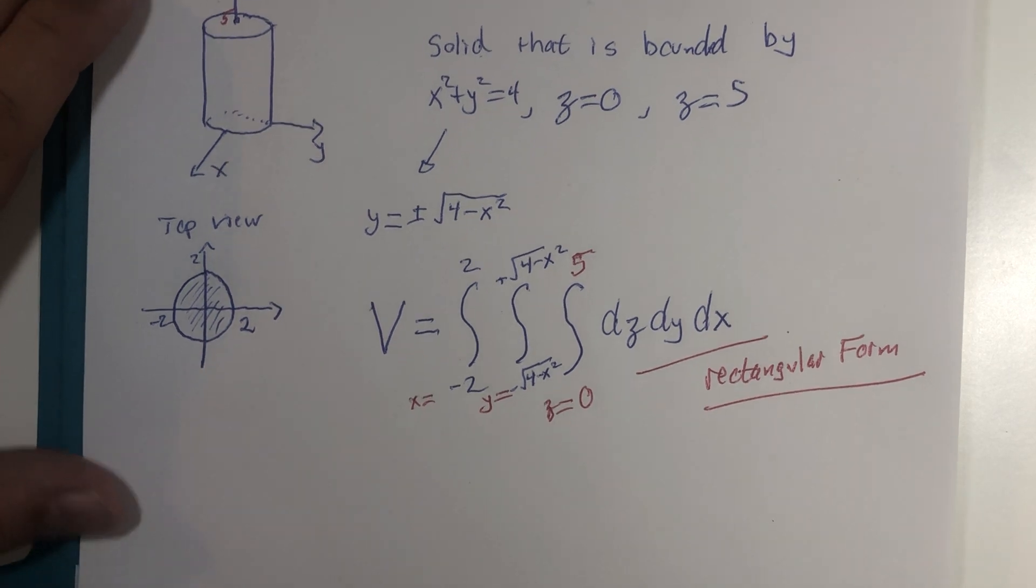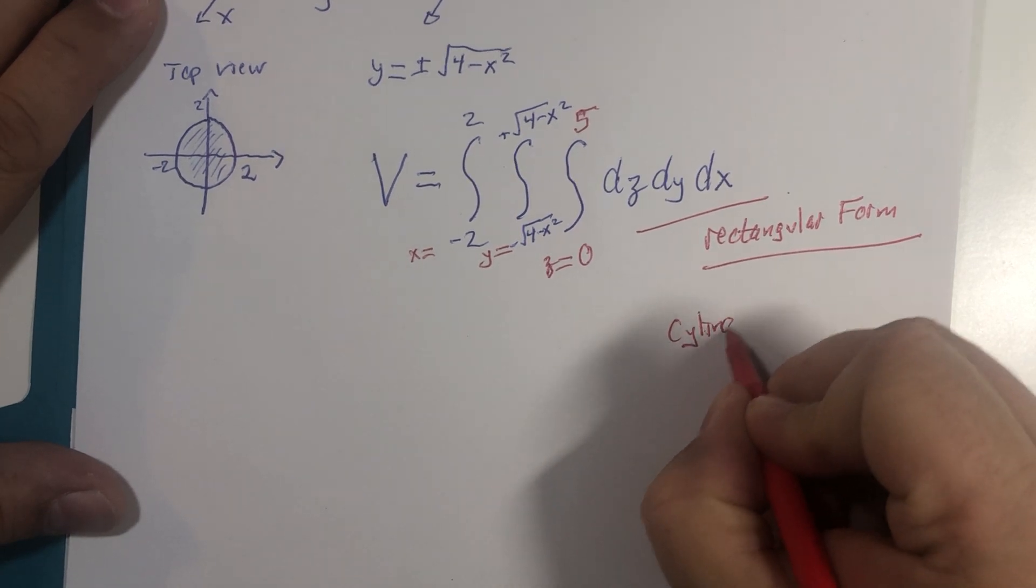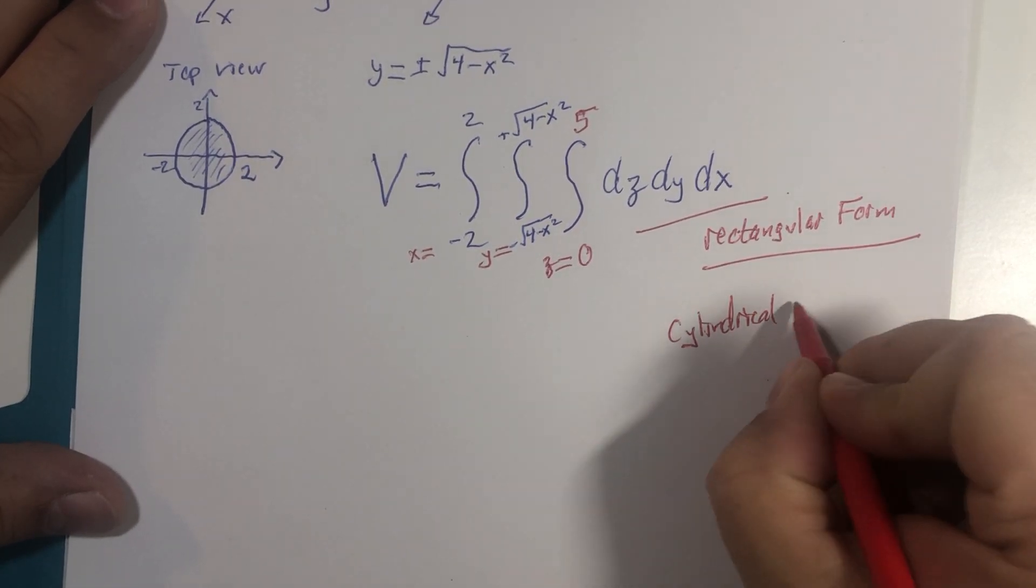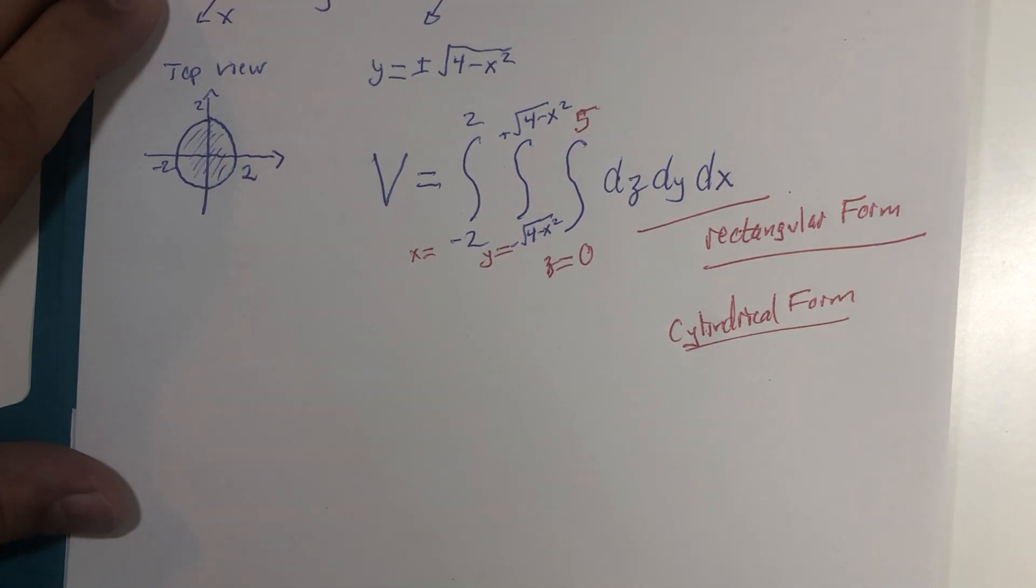Let's now convert it to cylindrical form. Cylindrical form is where the z values will not change.